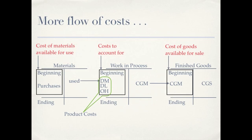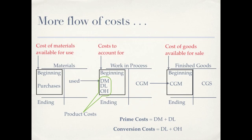Let's split those three up in different combinations. Direct materials plus direct labor are called prime costs — that's the prime cost of the product. Direct labor plus overhead is called conversion costs, because it takes direct labor and overhead to convert a direct material into a finished good.